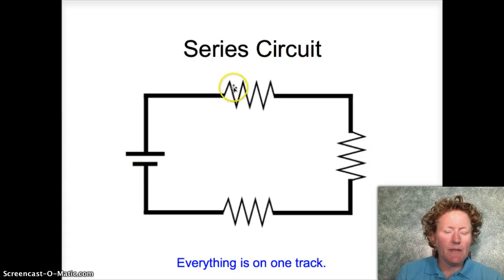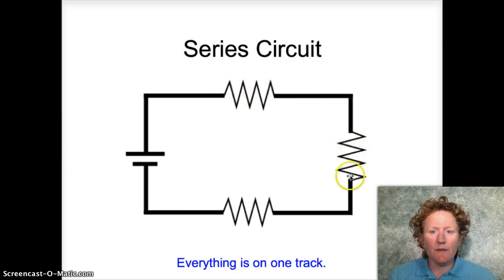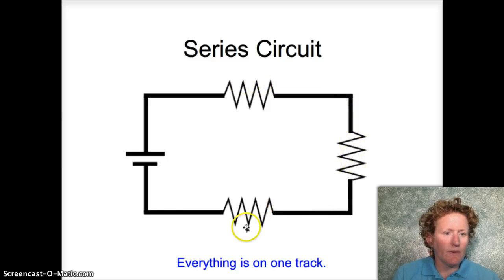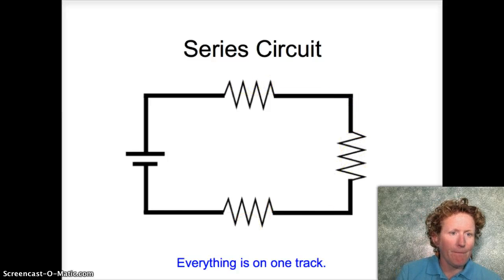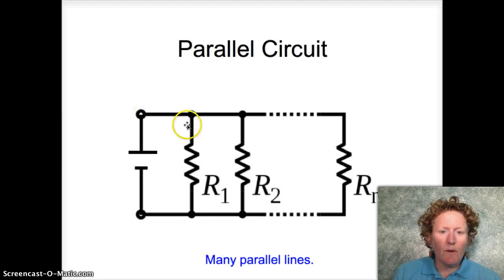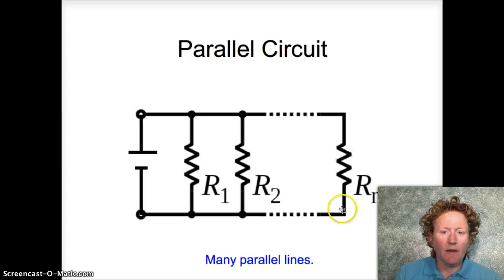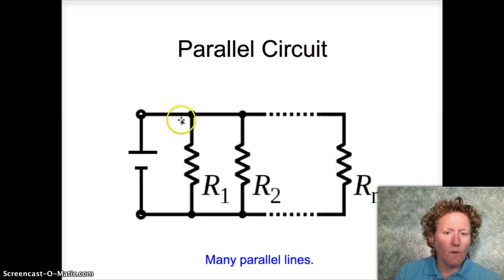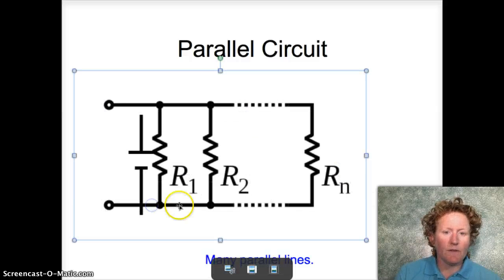This is a series circuit — just like the World Series, everything is in a line, one after the other, one track. Here is a parallel circuit where there are lots of parallel lines and everything has its own little circuit. The resistors all have their own little circuit.